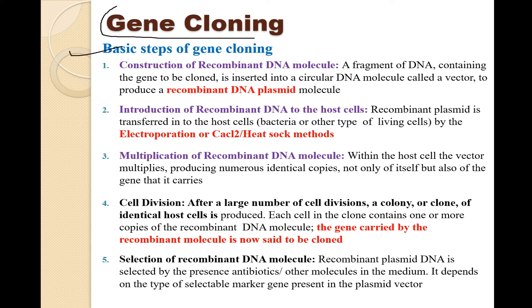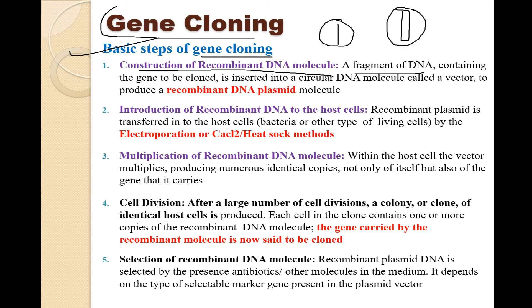Before talking about the complexities of gene cloning, let's talk about the basic steps. Starting with the first step: the construction of a recombinant DNA molecule. A recombinant DNA molecule is a fragment of DNA which contains the particular gene to be cloned. We insert this fragment into a circular DNA molecule called a vector to produce a recombinant DNA plasmid molecule.